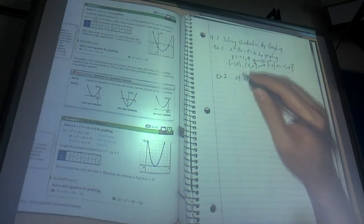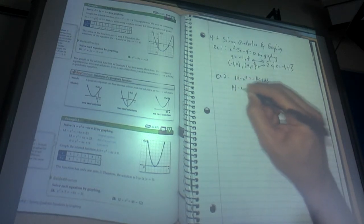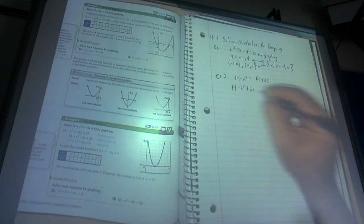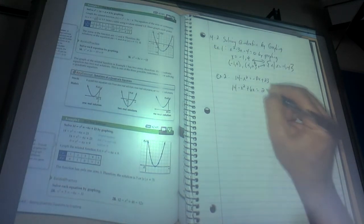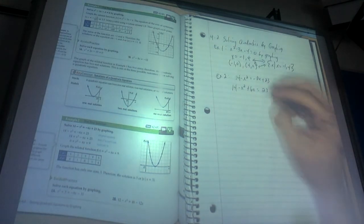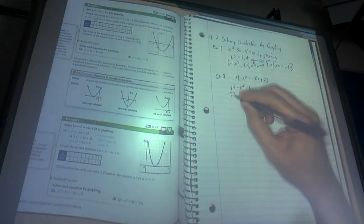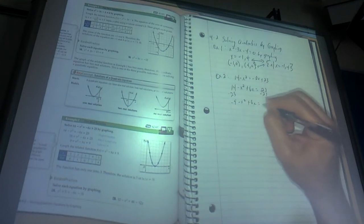I'm going to now subtract 23 and get it over here, so this is negative 9 minus x squared plus 6x equals 0. Now, that's funny-looking, so I'm going to put it in order.